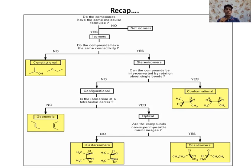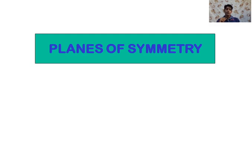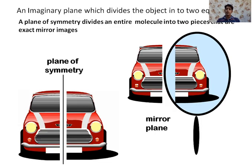First, we will discuss the plane of symmetry. A plane of symmetry is one which divides the object into equal halves — it divides the entire molecule into two pieces that are exact mirror images of each other. We can observe this in the example of a car: the car has a plane of symmetry, an imaginary plane that divides it into two equal parts.